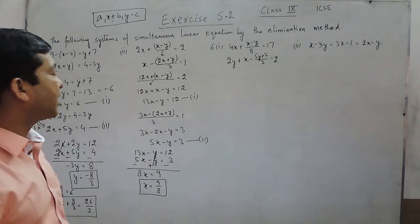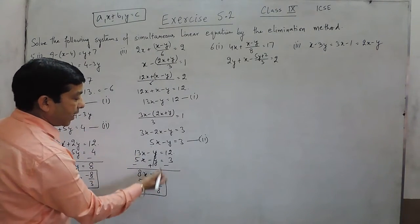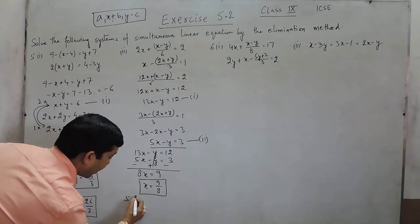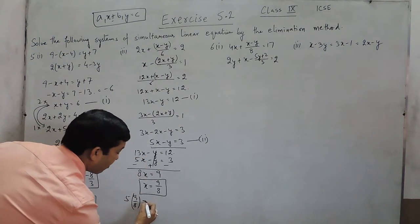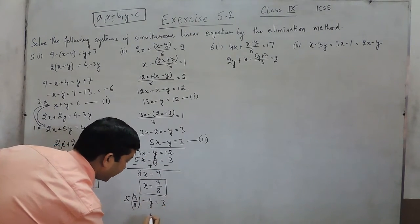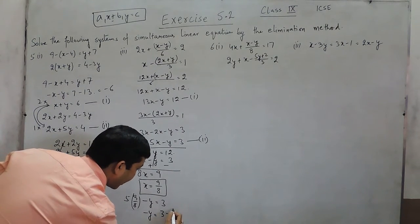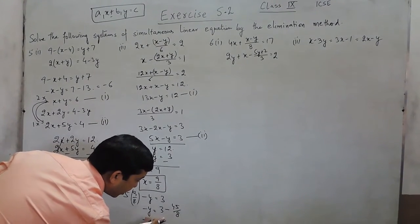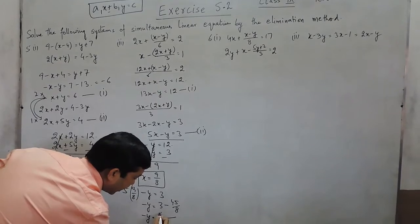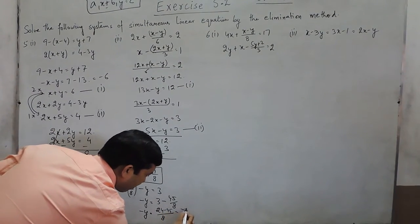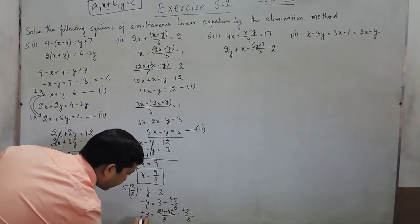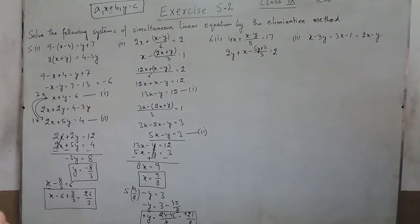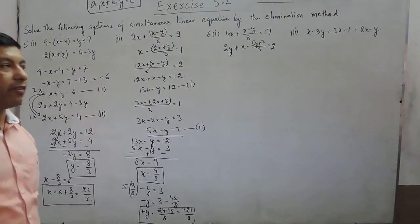We can cancel out x by making coefficients equal, and we can also cancel out y by making coefficients equal — this is known as the elimination method. If we put the value of x in the simplified equation, it is 5 multiplied by 9 upon 8 minus y is equals to 3. So minus y equals 3 minus 45 upon 8. Taking 8 as LCM, it is 24 minus 45, that is minus 21 upon 8. Multiplying by a negative sign, the value of y comes out to be 21 upon 8. So we can solve both the values of x and y.